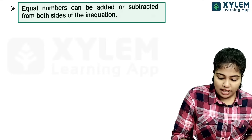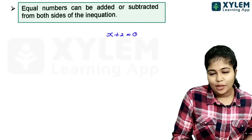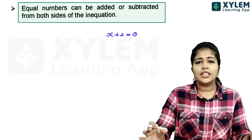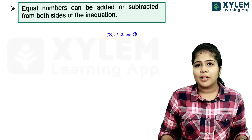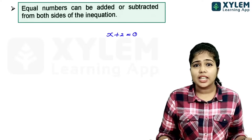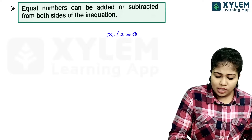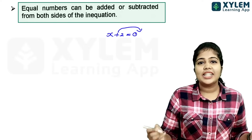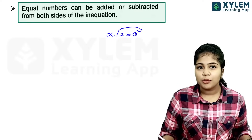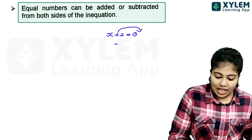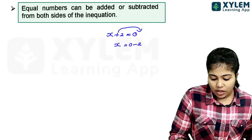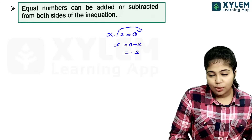For example, x plus 2 is equal to 0. If you want the solution, we will go to the right hand side. That is, x is equal to 0 minus 2, which is equal to minus 2.